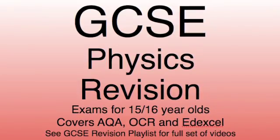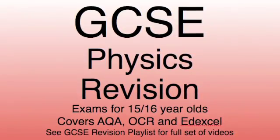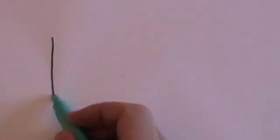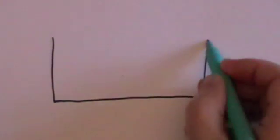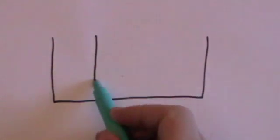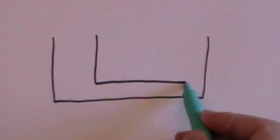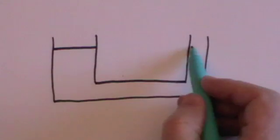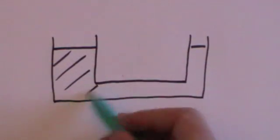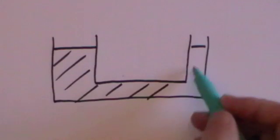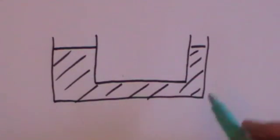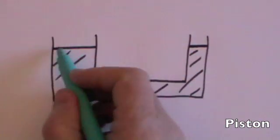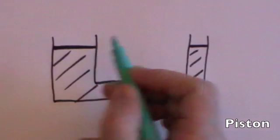Hello, today we're continuing with our GCSE physics revision series looking at hydraulics. Let me draw you a typical hydraulic system. These are essentially pipes in which we put a fluid — it could be water, although usually it's some form of oil — and we put what's called pistons at the surface of the fluid.